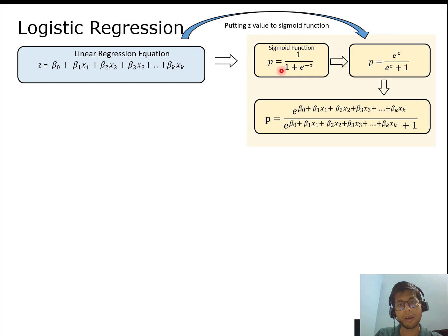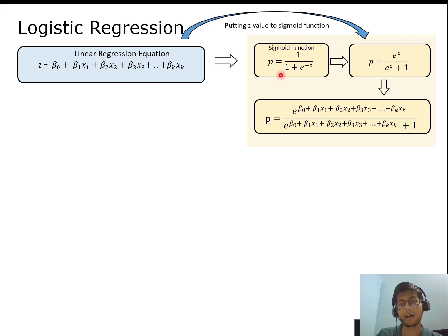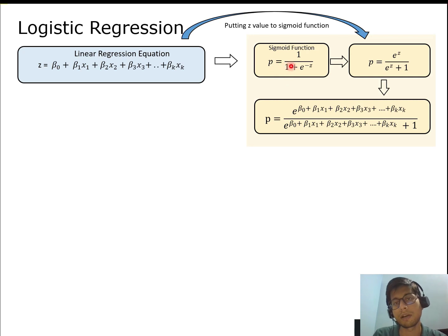The sigmoid function is a probability function and it returns a value between zero and one. This resolves the threshold problem — instead of an arbitrary continuous value, we get a probability. If we define a threshold of 0.5, values above 0.5 (up to one) are class one and below 0.5 (down to zero) are class zero. That makes it very easy to predict any classification problem, which is why the sigmoid function comes to our rescue.